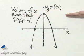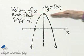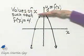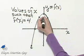Right along this horizontal line, all y values are 4. So where does this intersect the graph? Right here.